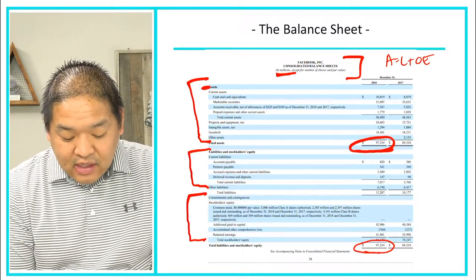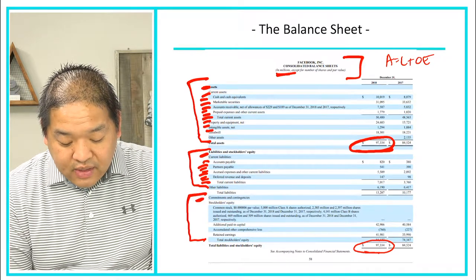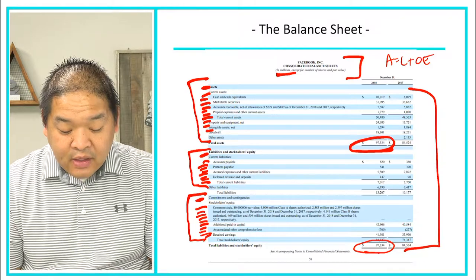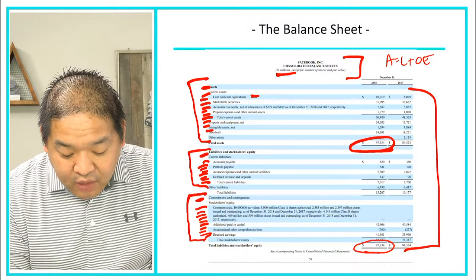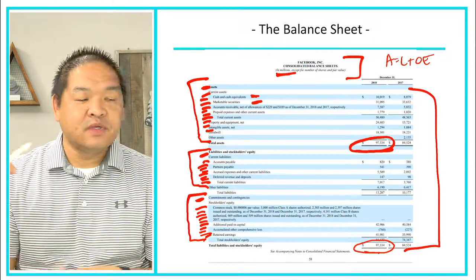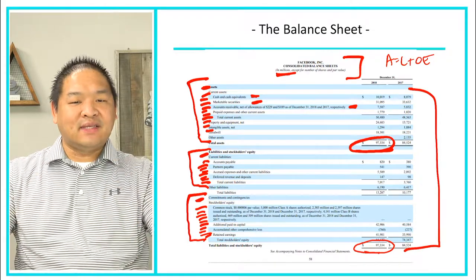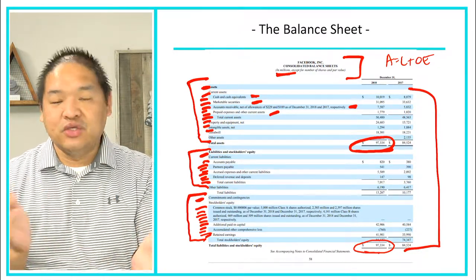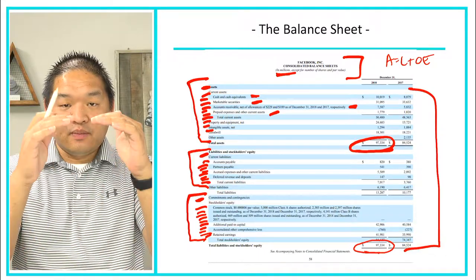Looking at the asset section, cash is listed first — most liquid. Then marketable securities, which are investments you can sell online and convert to cash quickly. Receivables come next because you have to collect from customers, which takes more work. Then prepaid, where you'd have to ask the vendor for a refund. So we go from most liquid to least liquid.